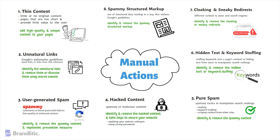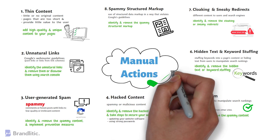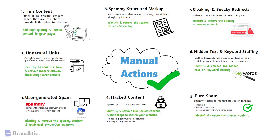In manual actions, to fix any penalty, you need to address the specific issues that caused that penalty and make sure to follow Google's guidelines when optimizing your site. Once you've fixed the issue, you can submit a reconsideration request to Google explaining the steps you've taken to address the issue and prevent it from happening in the future.